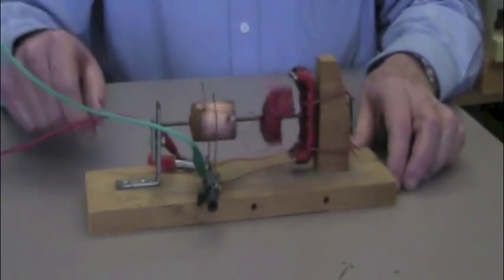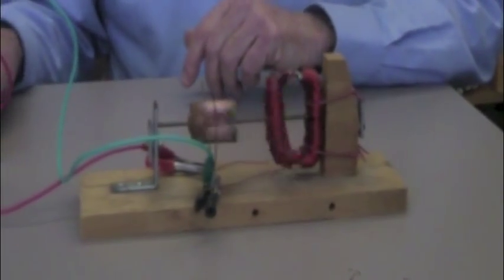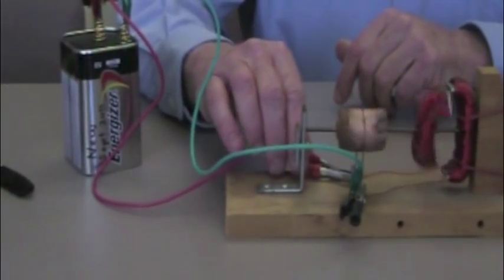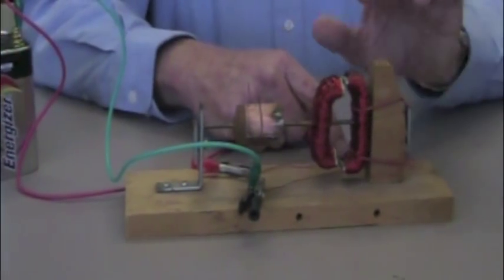So this is an example of a fairly simple electric motor powered by a dry cell, and the way it works - and I'll turn it off so we can hear what I have to say.